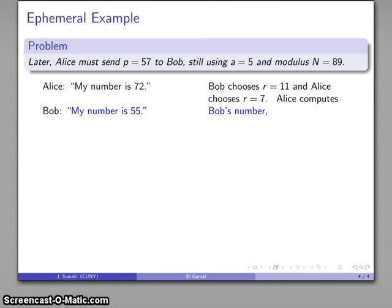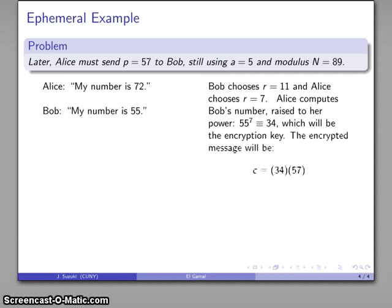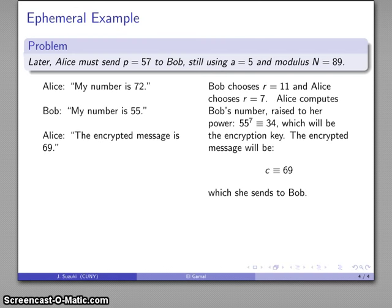Alice figures out what the encryption key is by taking Bob's number, raising it to her power, and that's going to give us 34 as the key. And then the message is going to be the value, 57, times the key, reduced mod 89. So, if we do that, 69 as the message, and she sends that information to Bob.